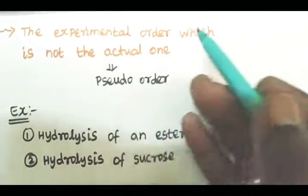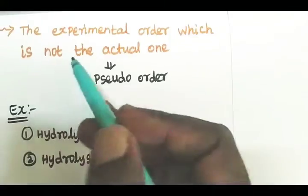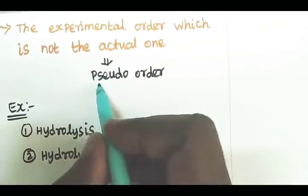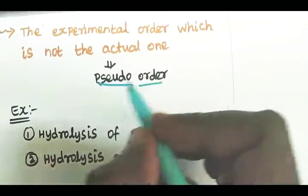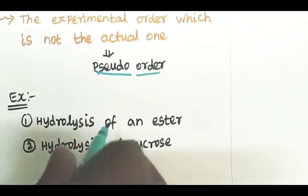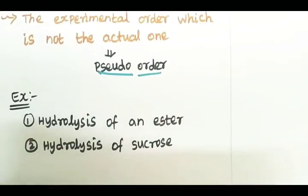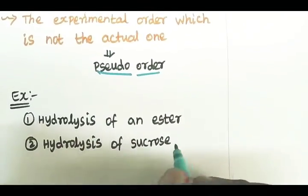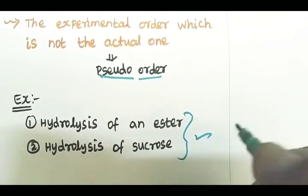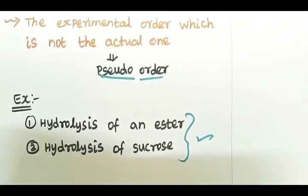The experimental order, which is not the actual one, is called the pseudo-order. Examples of pseudo-order reactions include the hydrolysis of an ester and the hydrolysis of sucrose. These are the classic pseudo-order examples.